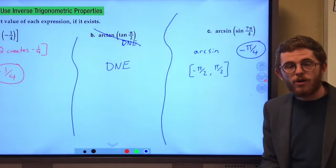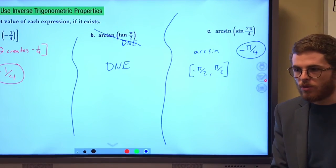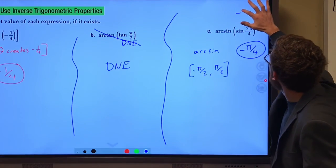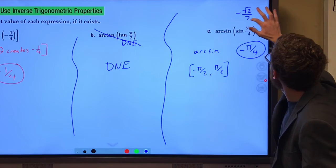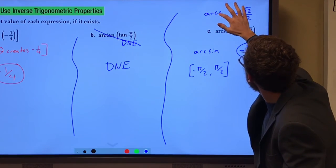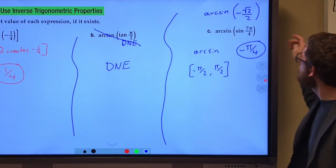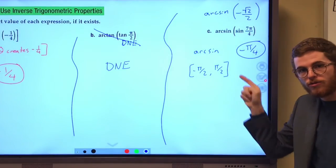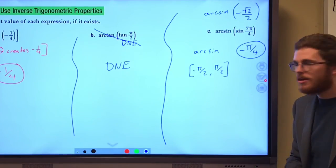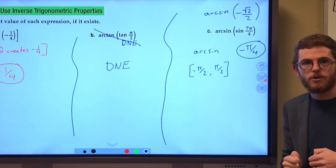So, sine of seven pi over four, if you want to think through it this way, sine of seven pi over four would be negative root two over two, and the arc sine of negative root two over two would be negative pi over four. We would not be giving that seven pi over four as our answer, because that's not in our restricted domain.